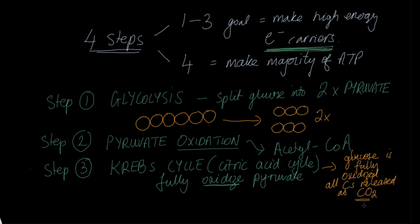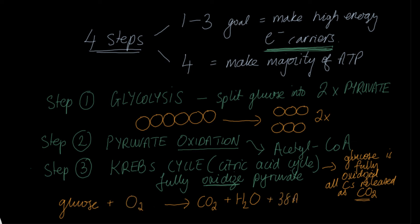We've now covered the majority of the cellular respiration equation in the first three steps. We've taken glucose and broken it down to CO2. The remaining parts of the equation — using oxygen and releasing water and the bulk of the ATP — are handled in the last step.